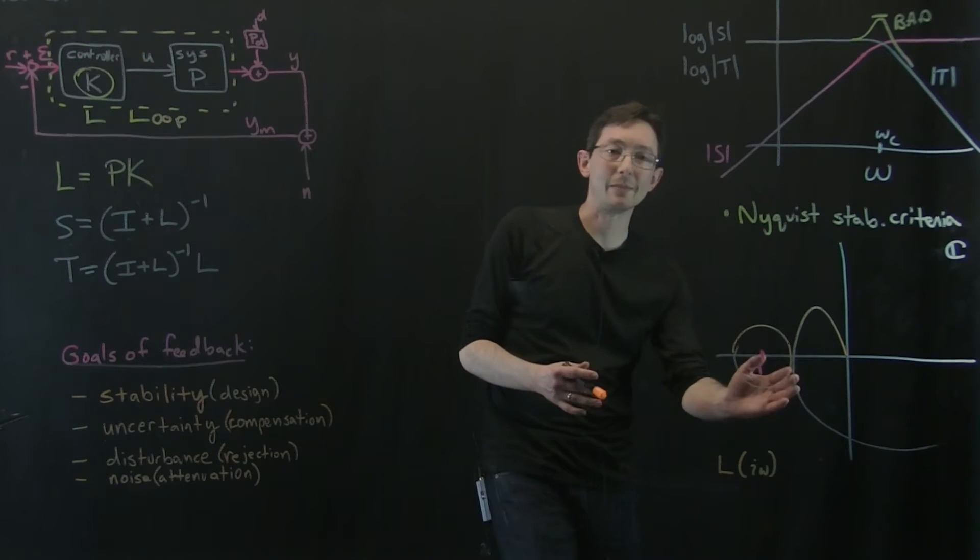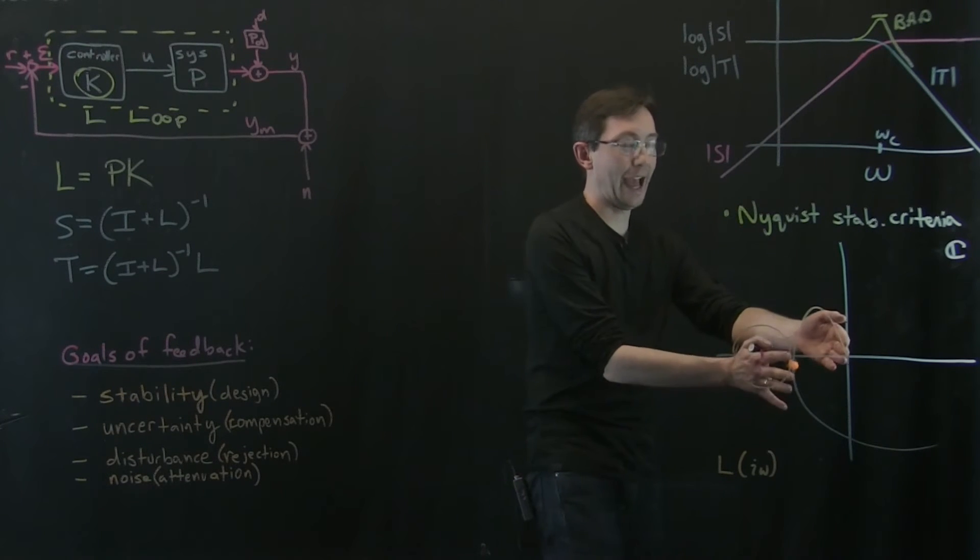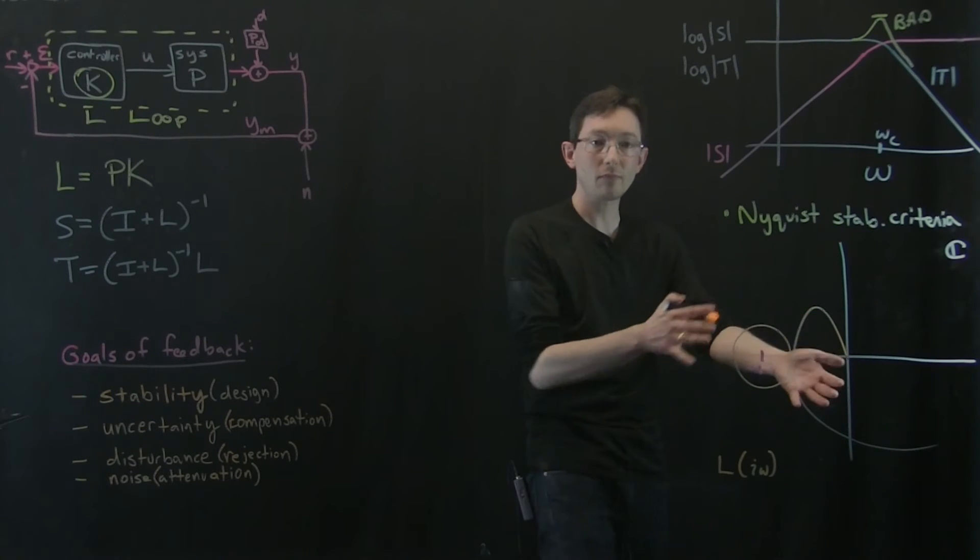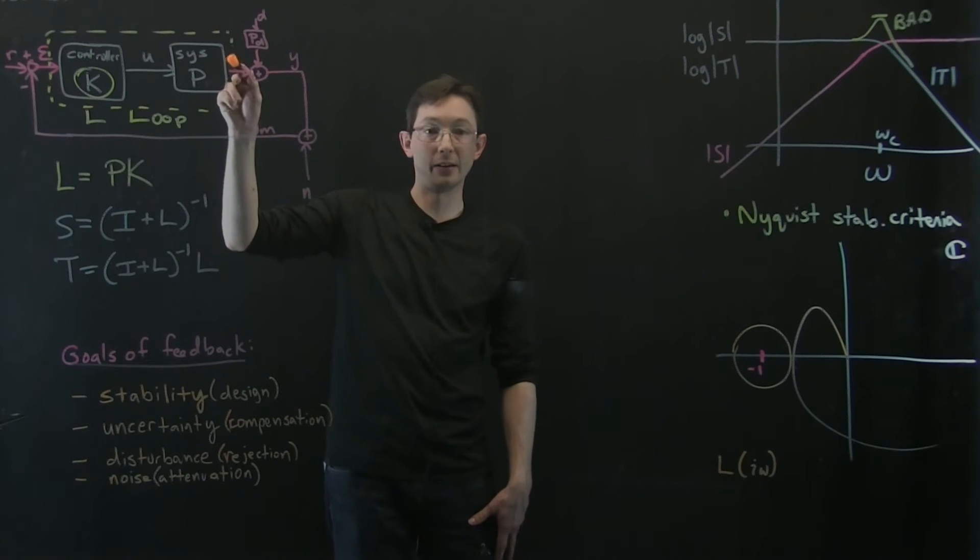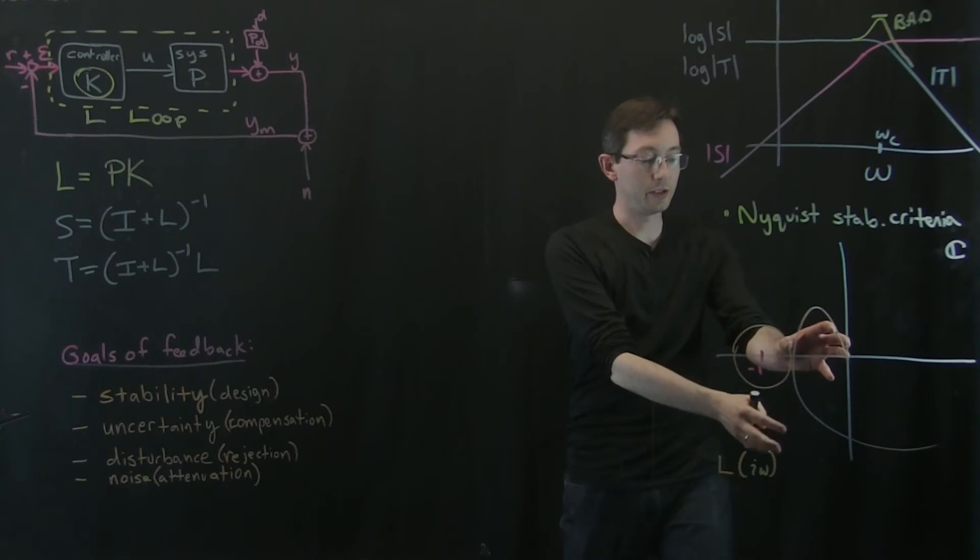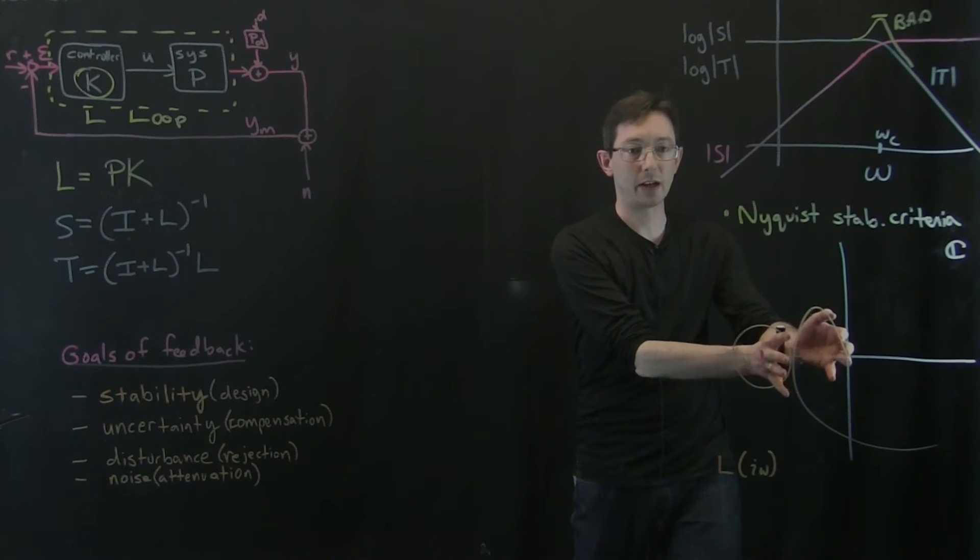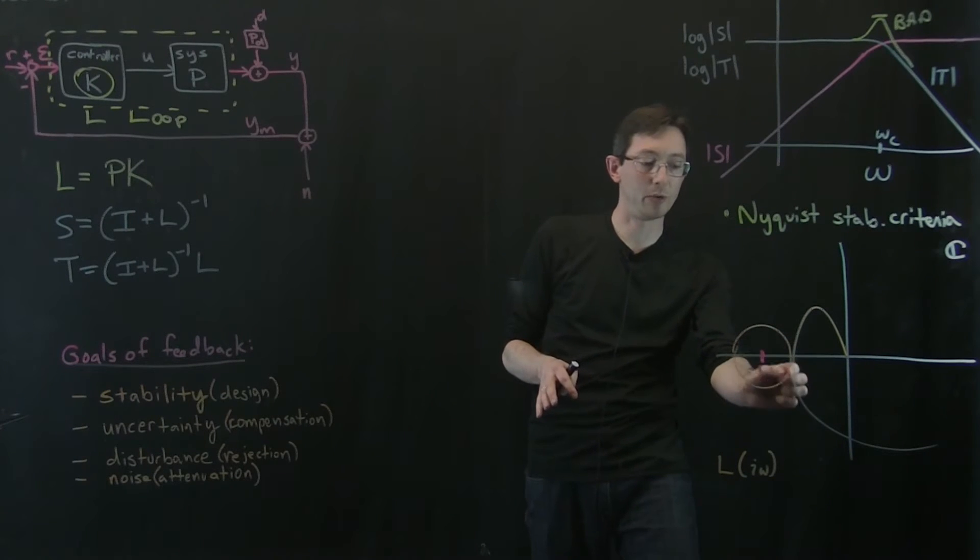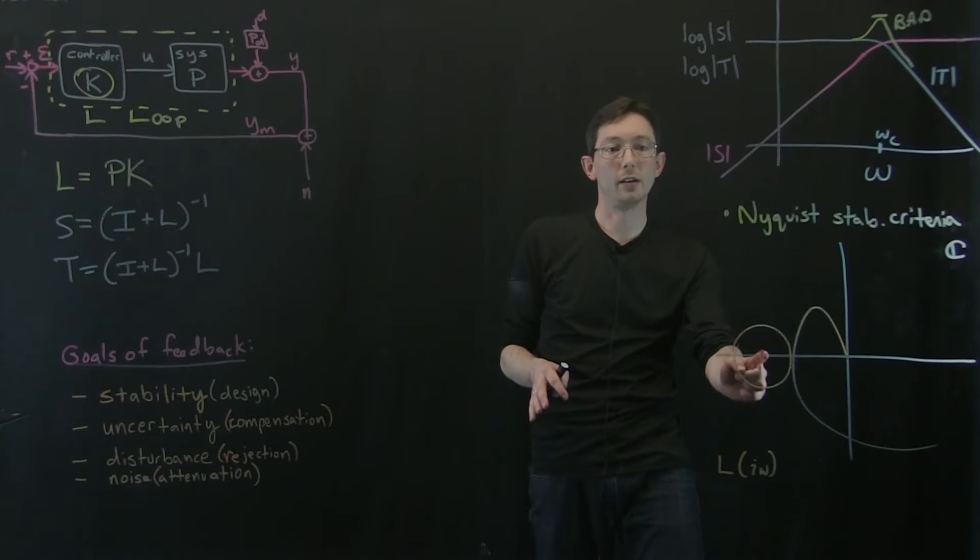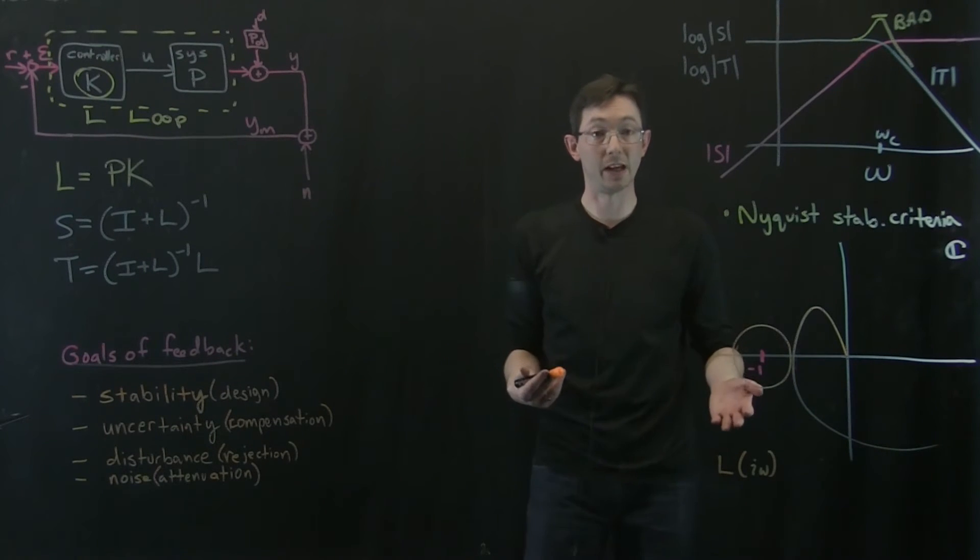You can also see that there's some phase information. So let's say there's a time delay here, what that's essentially going to do is it's going to take my loop transfer function and kind of rotate it. And it might be that when I rotate it, at some point, a point on this curve will pass through this negative one point and go unstable.